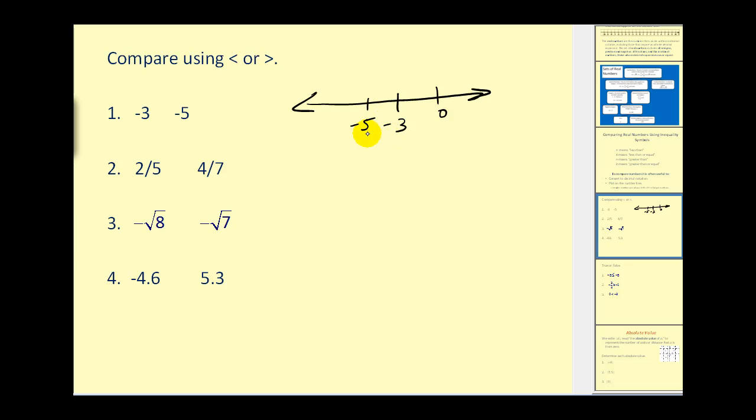Since negative 5 is to the left of negative 3, we can say negative 5 is less than negative 3, or we can say negative 3 is greater than negative 5. Either way, negative 3 is the larger of the two. So to compare using these two inequality symbols, we would say negative 3 is greater than negative 5.